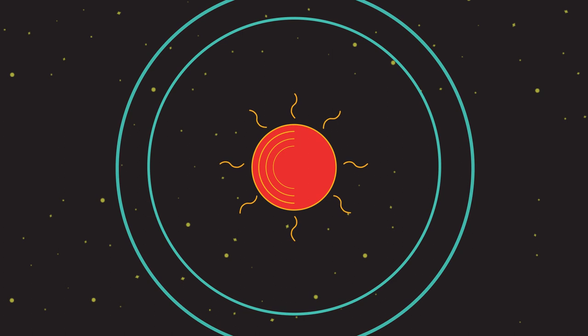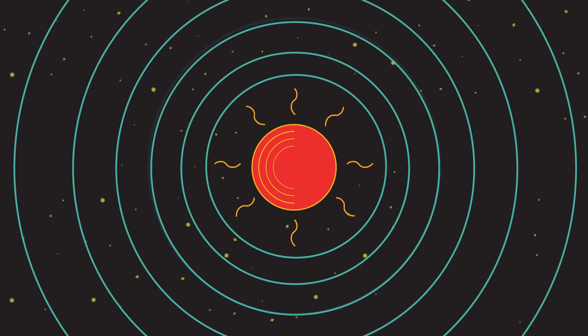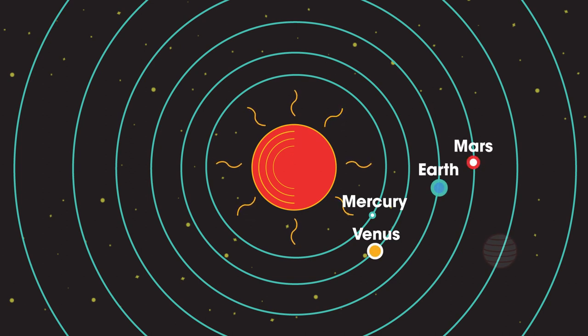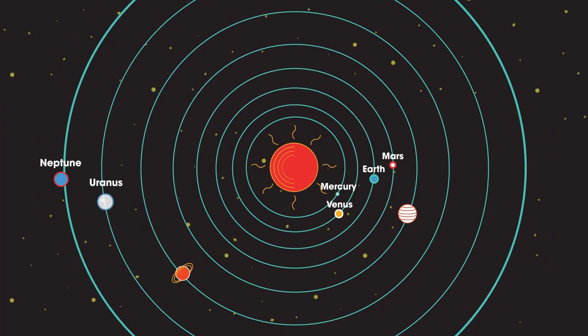This means that objects in small orbits, such as the inner planets Mercury, Venus, Earth and Mars, travel faster than objects in larger orbits like Neptune or Uranus.